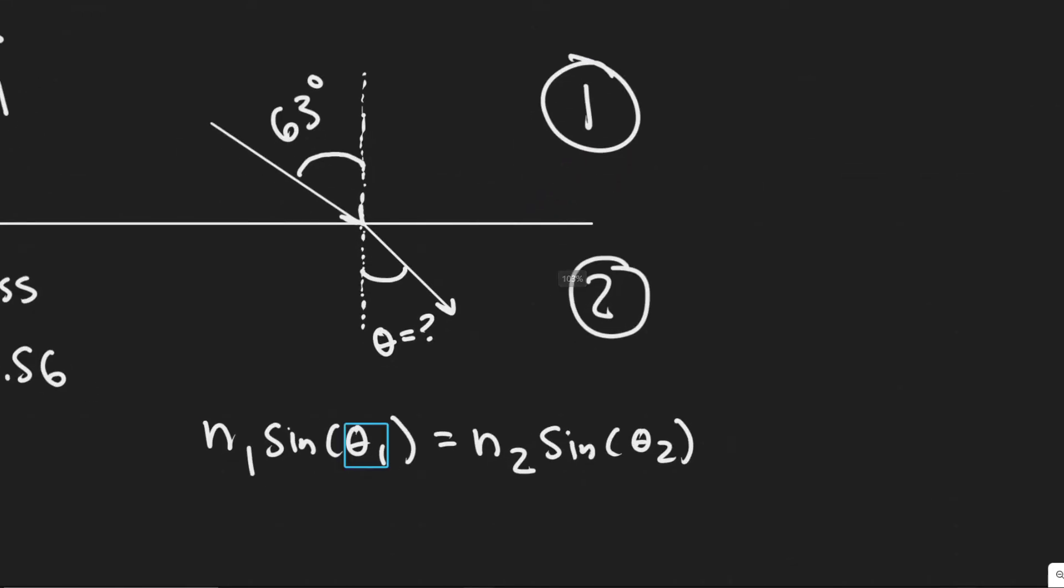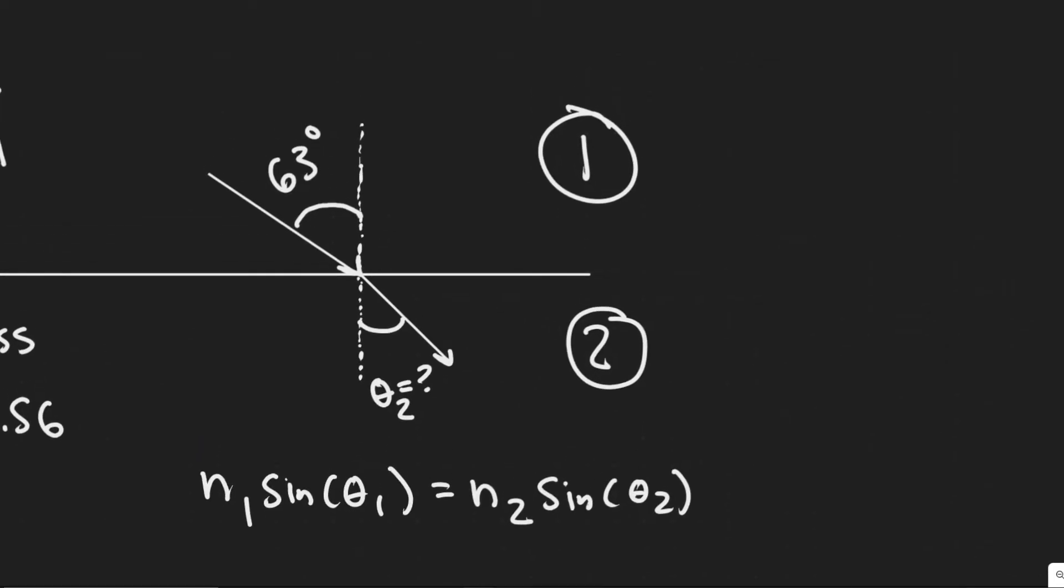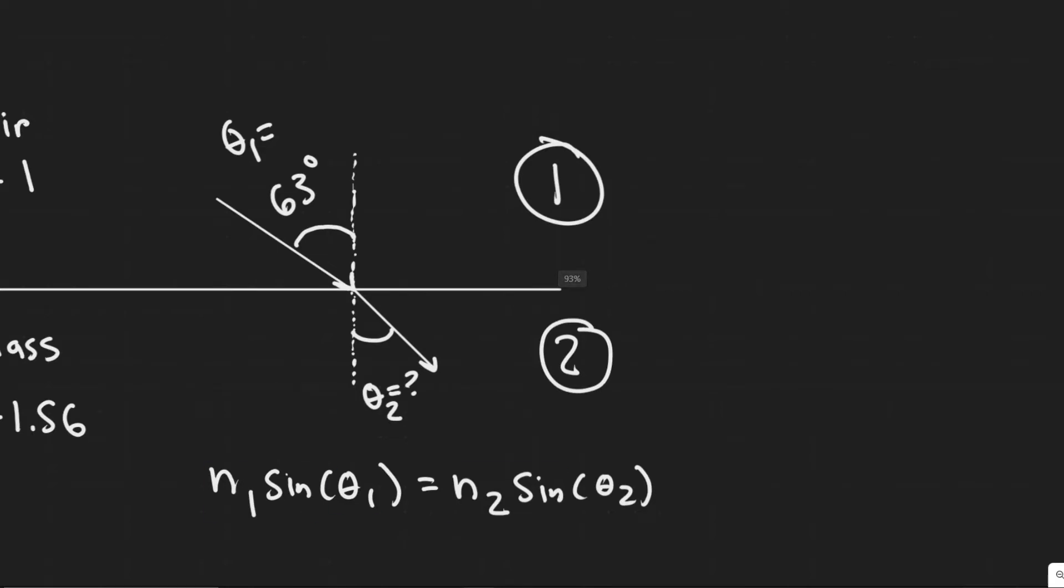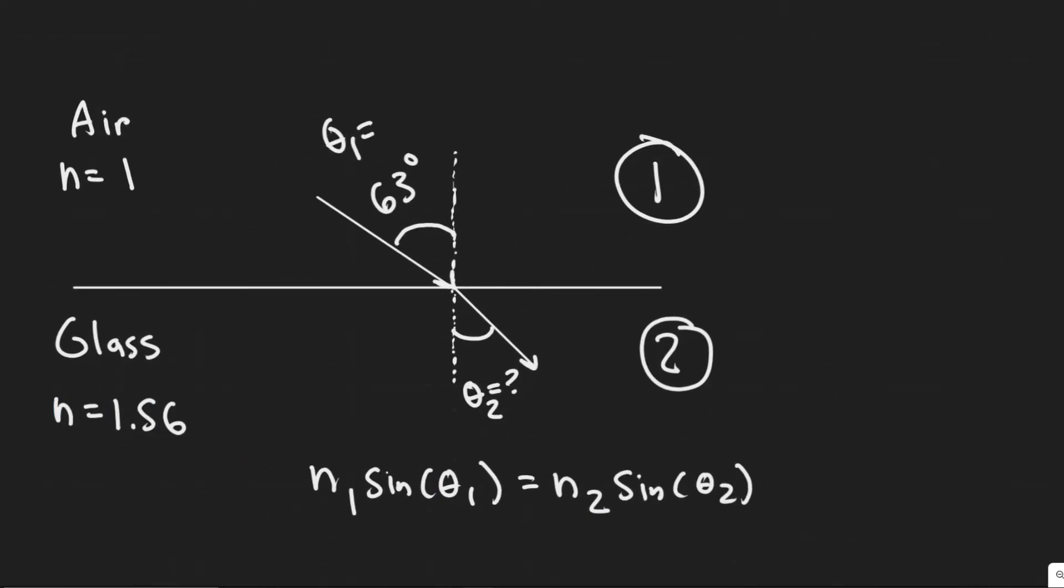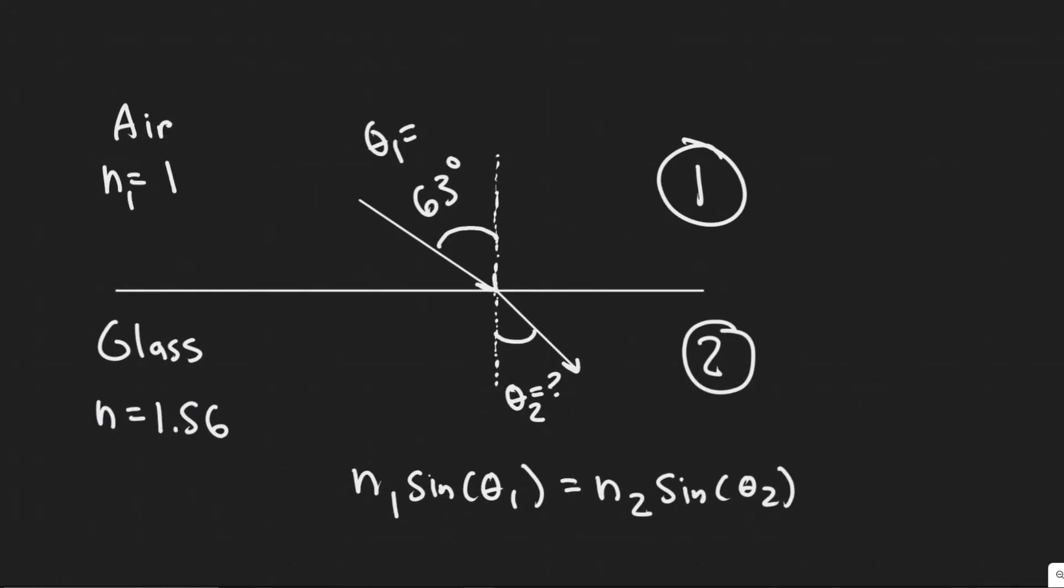Theta 1 would be your angle of incidence. Theta 2 would be your angle of refraction. So this is theta 2. This right here is your theta 1. And then n1 and n2 are just these n values. n1 would be the initial one, and this would be your n2.